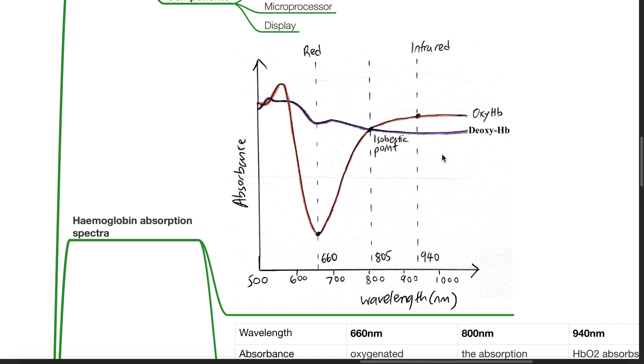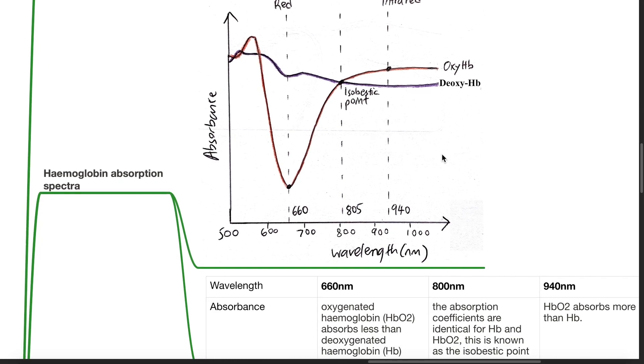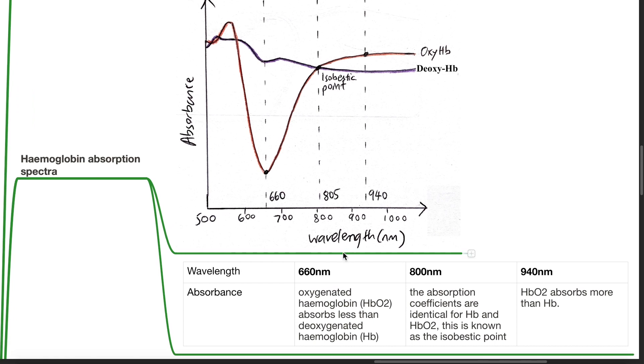This is a graph of the hemoglobin absorption spectra. At a wavelength of 660 nm, oxygenated hemoglobin absorbs less light than deoxygenated hemoglobin.